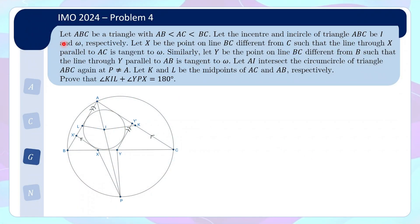Here is the problem statement. We let ABC be a triangle with AB less than AC less than BC. Let the incenter and the incircle of triangle ABC be I and ω respectively. Let X be a point on the line BC different from C such that the line through X parallel to AC is tangent to ω. Here is the point X, and this line is parallel to AC and at the same time tangent to the incircle.